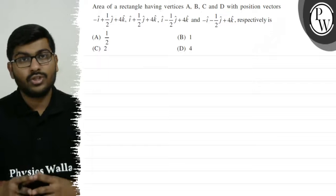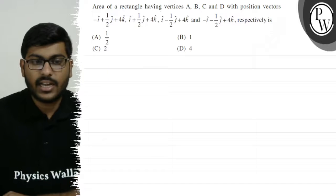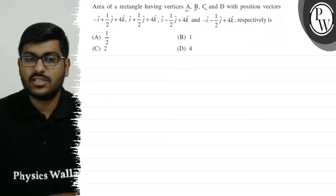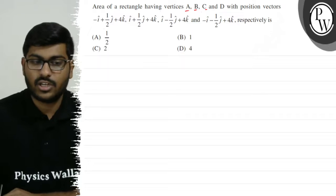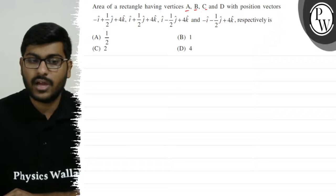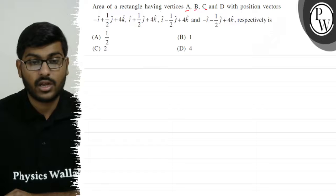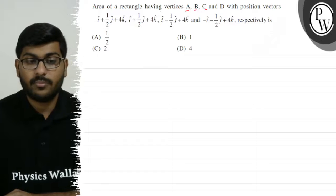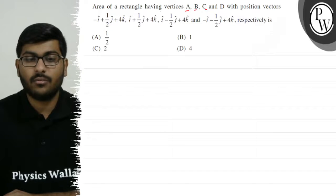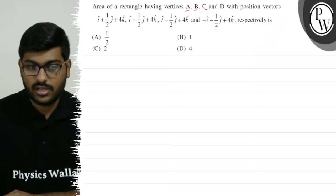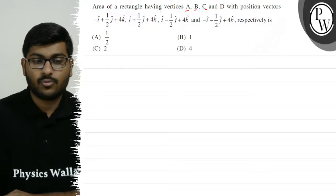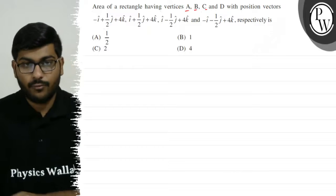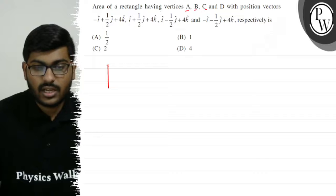Let's see this question. The question says that the area of a rectangle having vertices A, B, C and D with position vectors: minus i-cap plus 1/2 j-cap plus 4k-cap, i-cap plus 1/2 j-cap plus 4k-cap, i-cap minus 1/2 j-cap plus 4k-cap, and minus i-cap minus 1/2 j-cap plus 4k-cap. The options are A: 1/2, B: 1, C: 2, D: 4.